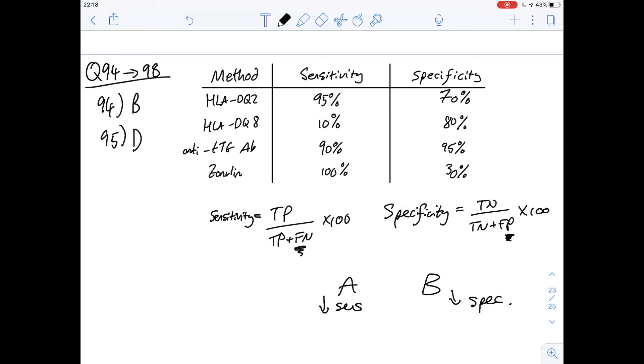What about specificity? So we'd expect zonulin then if this was true if A was the answer to have a lower specificity and of course it does. HLIDQ8 has a higher specificity of 80% and zonulin has specificity of 30% so we could replace A then with HLIDQ8 and zonulin and this would still be true which means that 96 has to be A. Just to check the other answers we could go through and compare their specificities and sensitivities but because that works it saves us having to go through them all.